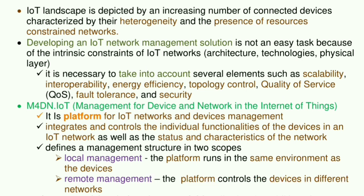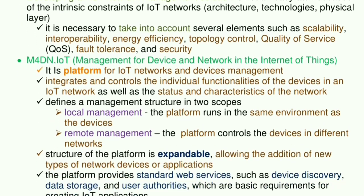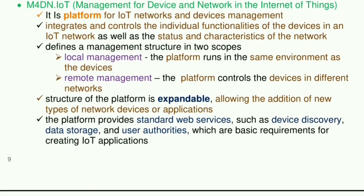Developing an IoT network management solution is not easy because of the intrinsic constraints of IoT network architecture, technologies, and physical layer. It is necessary to take into account several elements such as scalability, interoperability, energy efficiency, topology control, quality of service, cost, fault tolerance, and security. M4DN — IoT management for device and network in the Internet of Things — is a platform for IoT networks and device management. It integrates and controls the individual functionalities of devices in an IoT network as well as the status and characteristics of the network.